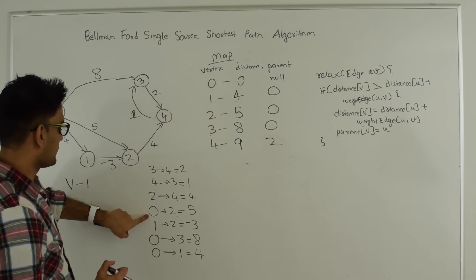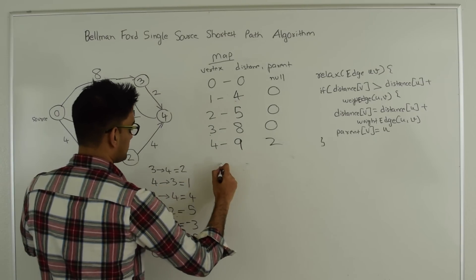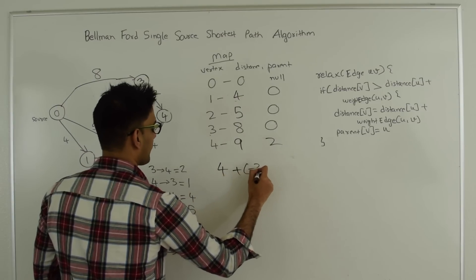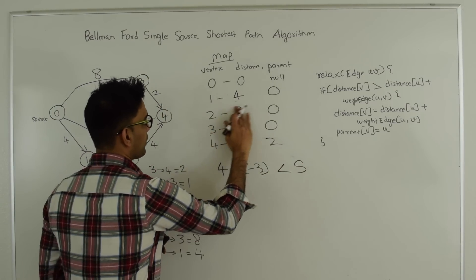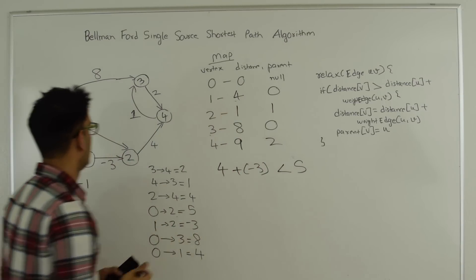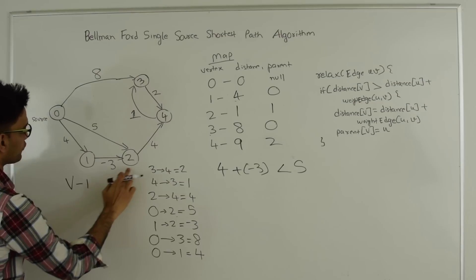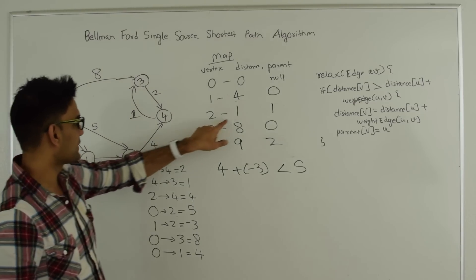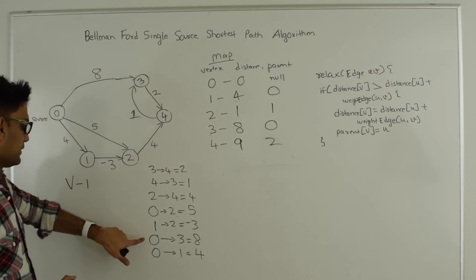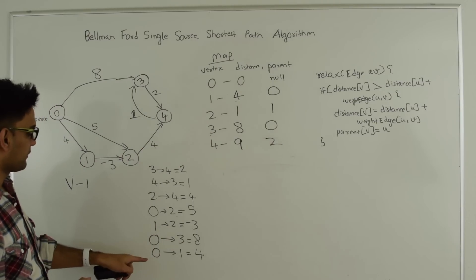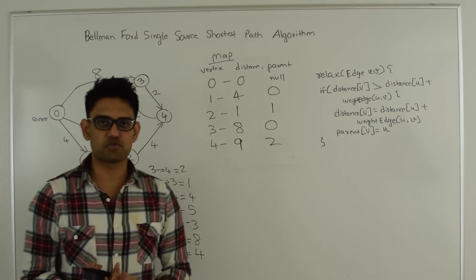Edge 0,2: distance of 2 is already 5, not going to change. Edge 1,2: distance of vertex 1 is 4 and weight of this edge is -3. The condition 4 + (-3) = 1 is less than the current distance of 2 which is 5, so this is true. We update vertex 2's distance to 1 and set its parent to 1. We found a shorter path to reach 2 via vertex 1. Edge 0,3 is already 8, and edge 0,1 is already 4, so no changes. That completes 2 repetitions; 2 more to go.